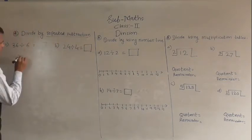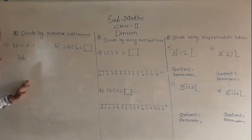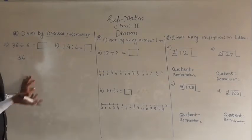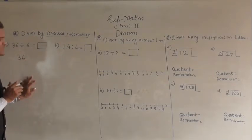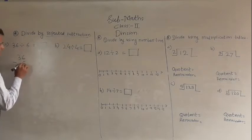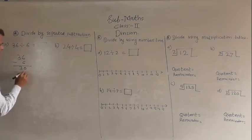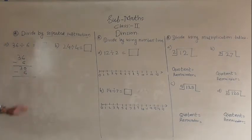First write the dividend and every time subtract 6. When 0 comes, stop and count how many times you subtracted — that will be the quotient. 36 minus 6 is 30. Then again subtract 6 by using backward counting, you will get the answer directly. 30 minus 6 is 24, 24 minus 6 is 18, 18 minus 6 is 12, 12 minus 6 is 6, and 6 minus 6 is 0.